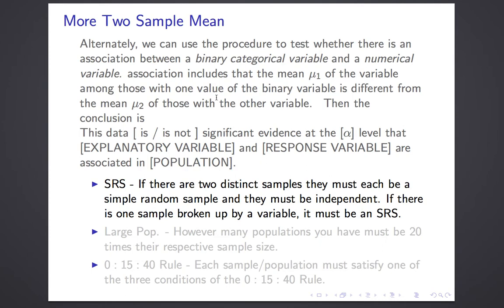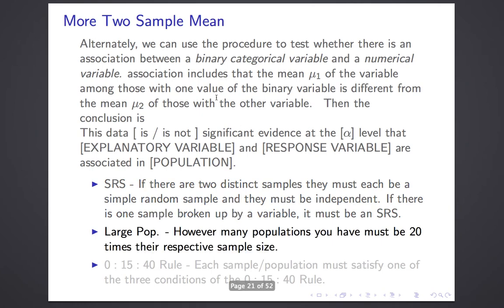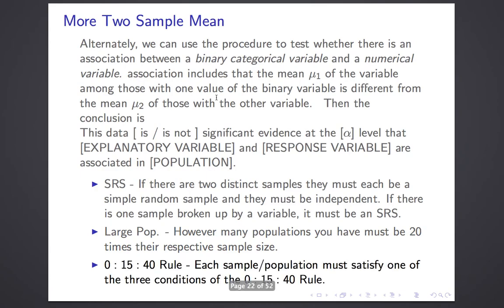Assumptions — nothing new here. Same distinction as in two-sample proportion. If you took a single sample from a combined population, that needs to be a simple random sample, and the large population condition needs to be true. If you took two distinct samples, they each need to be simple random samples of their separate populations, and they have to be independent. Each population needs to be 20 times its sample size. Finally, we apply the 0-15-40 rule, and in this case we ask that each sample separately satisfy one of the three conditions. They don't have to satisfy the same condition.